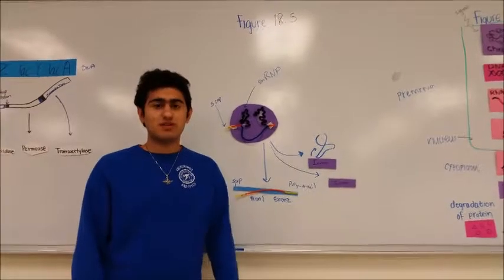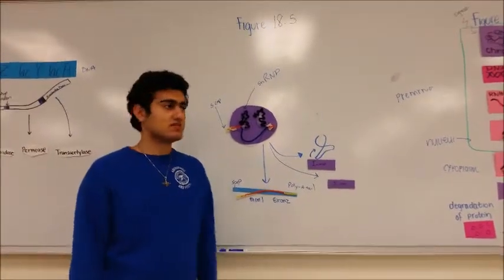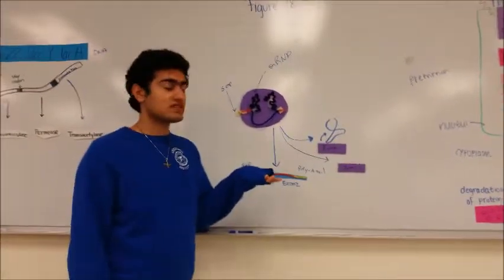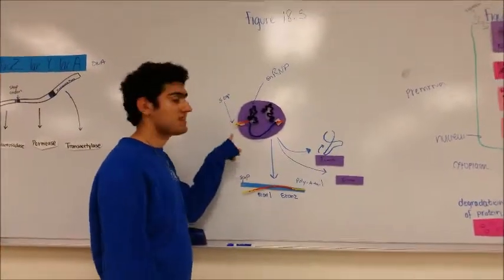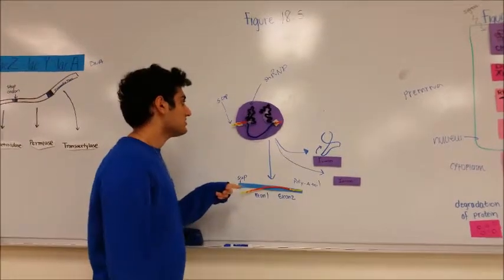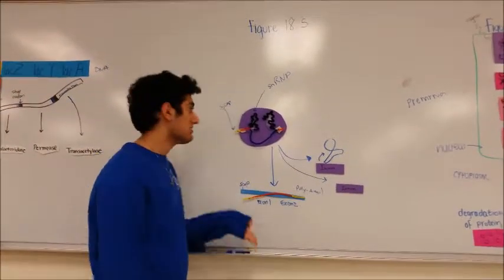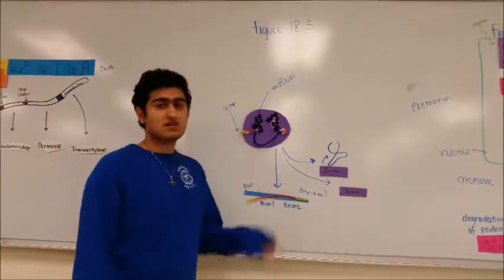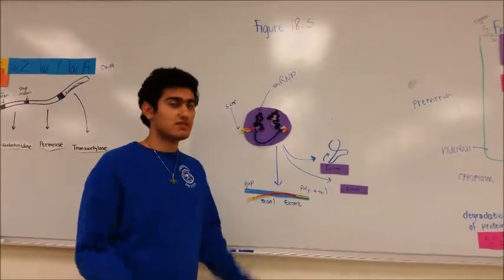In eukaryotes, mRNA has to be processed before it can leave the nucleus into the cytoplasm. Before it can be processed, there's the addition of a 5' cap and a poly-A tail. When it wants to be processed, the spliceosome comes and basically cuts out the introns and splices together the exons.